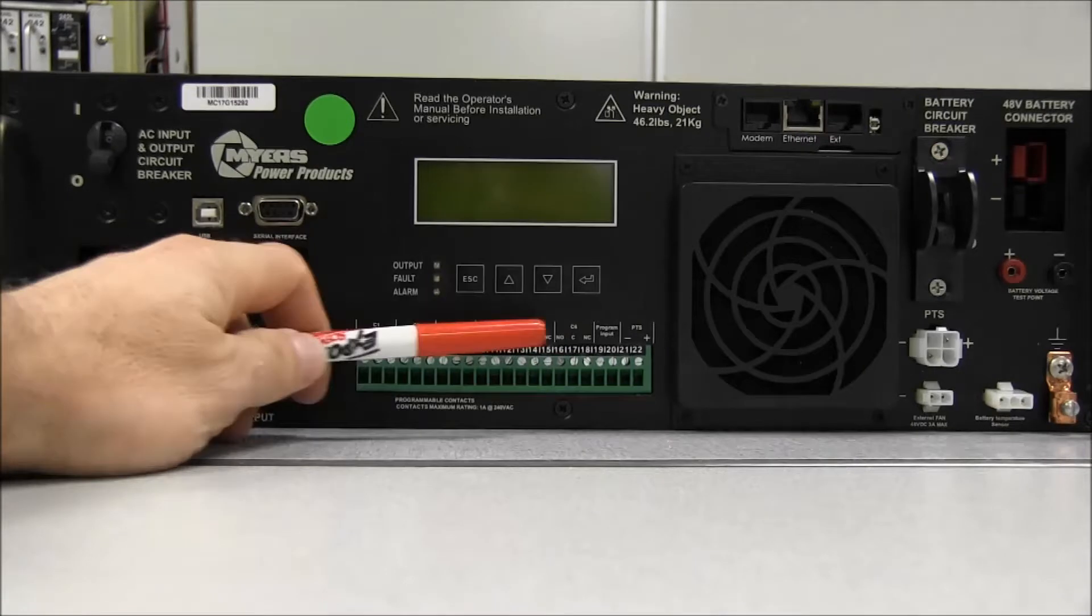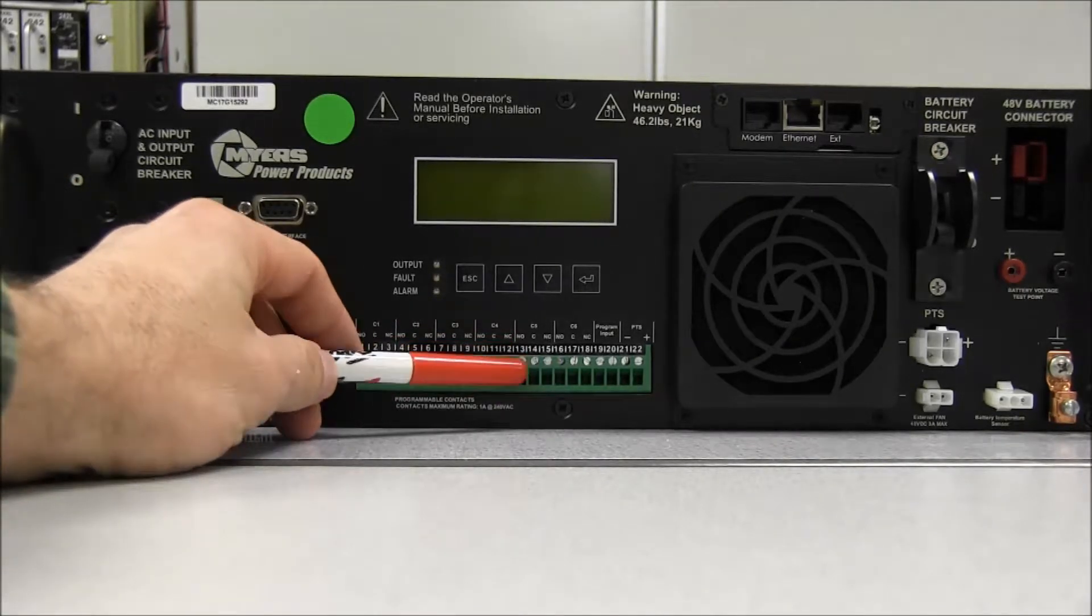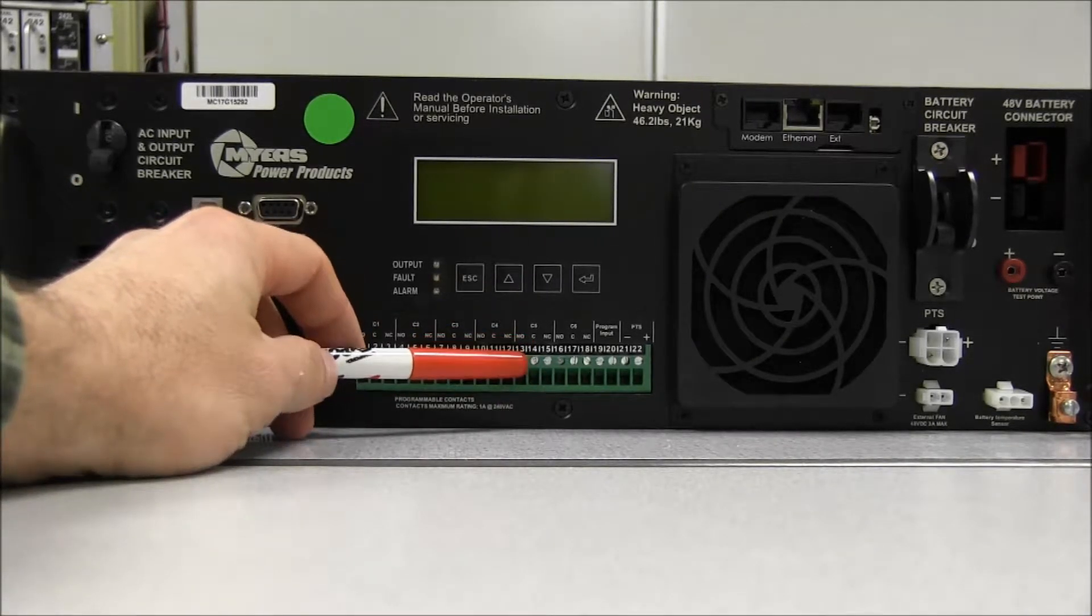At C5 and C6, this is the two hour timer contacts. So in the event that the power fails from the utility company, the timer would start. The BBS would activate and be providing the traffic signal with BBS power. And after two hours, then these contacts here would close. The normally open contacts here would close.